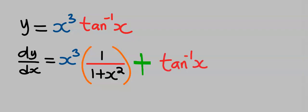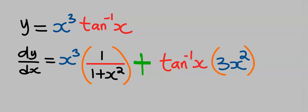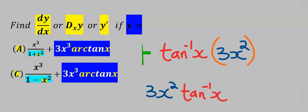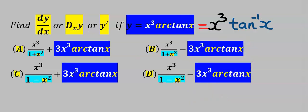Next keep tan inverse of x constant, then differentiate x to the power of 3 to get 3x squared. This is our dy/dx. From the options our answer is A. Remember that tan inverse of x is the same thing as arctan x.